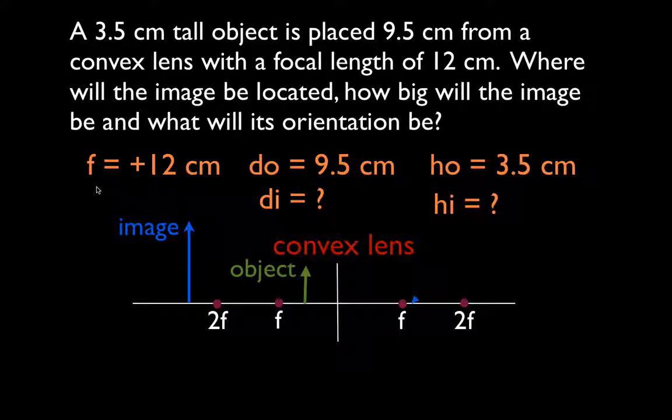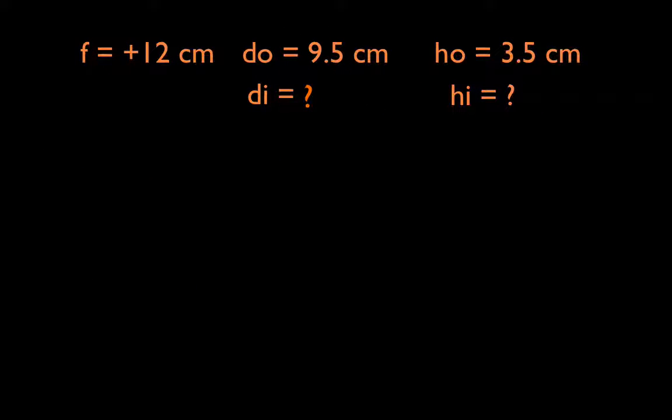You know from your ray diagram drawings that when the object is inside of F, the image is projected behind the object and it's bigger and it's right side up and it's virtual. So the answers for our distances and sizes and orientations and magnifications better match so that the image appears behind the object, that it's bigger, that it's right side up, and that it's a virtual image. Once again, this is not drawn to scale. I'm not going to measure this to figure out the distances or the heights. I'm just making this beyond inside of F, and I know this has to be back here somewhere oriented like that. Now we can go through and just calculate and see what happens.